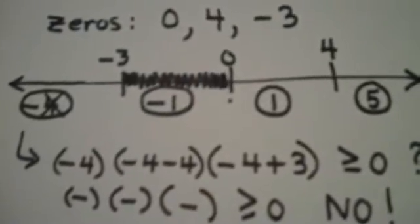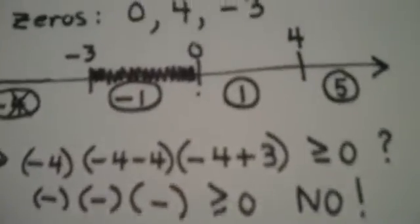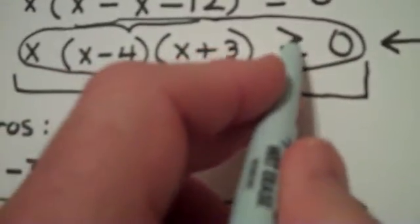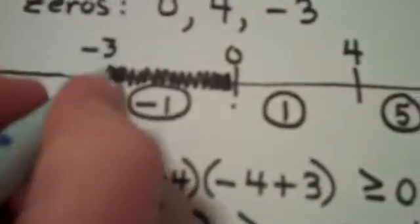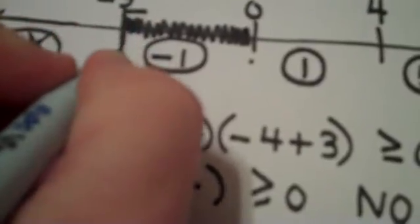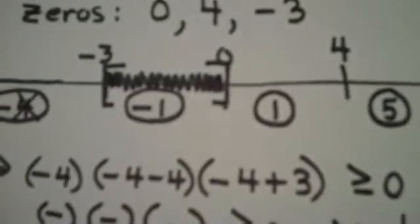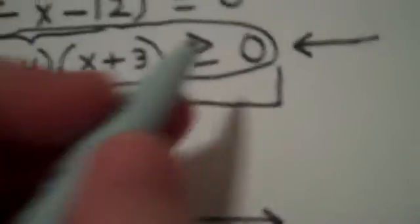So we know to shade in that region. We also, by the way, since we're here, the original problem said greater than or equal to zero. We know to include negative three and we know to include zero in our answers because the zeros are included in my solution set.